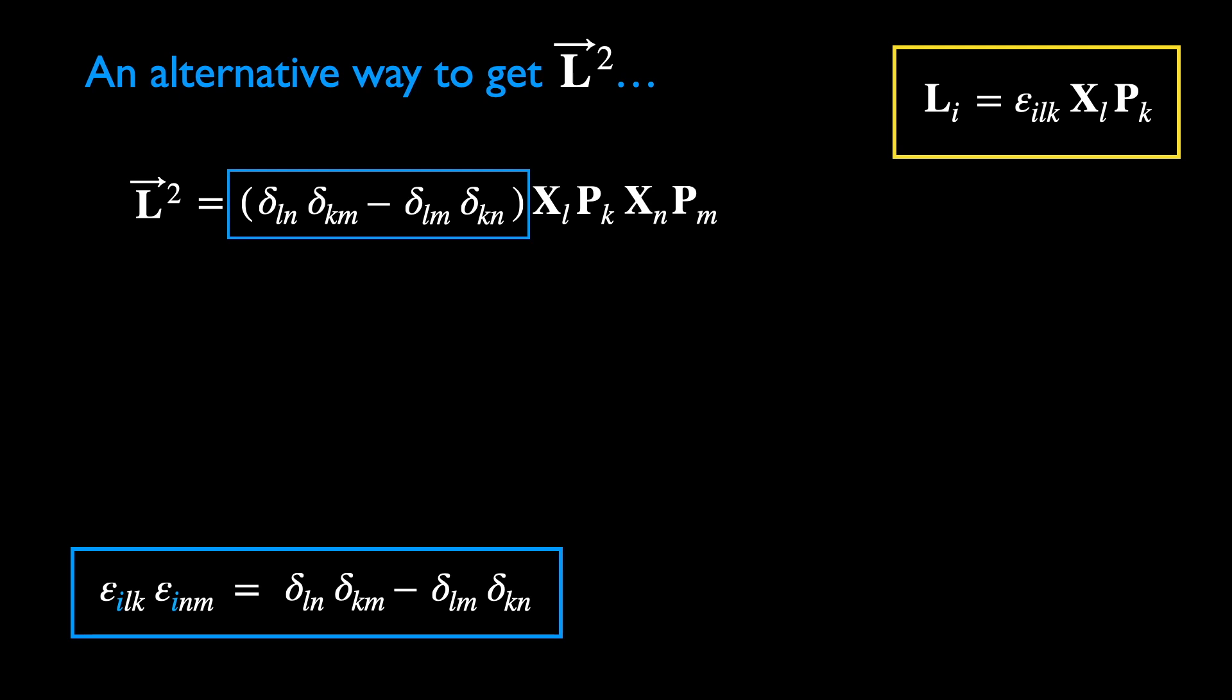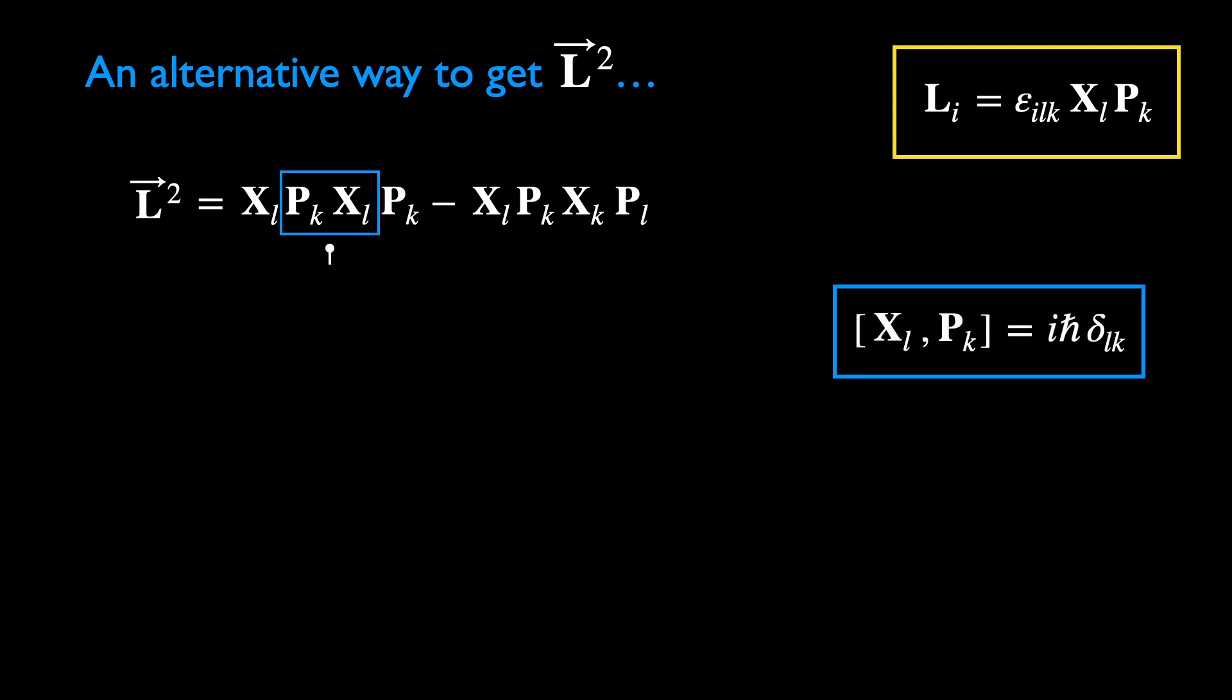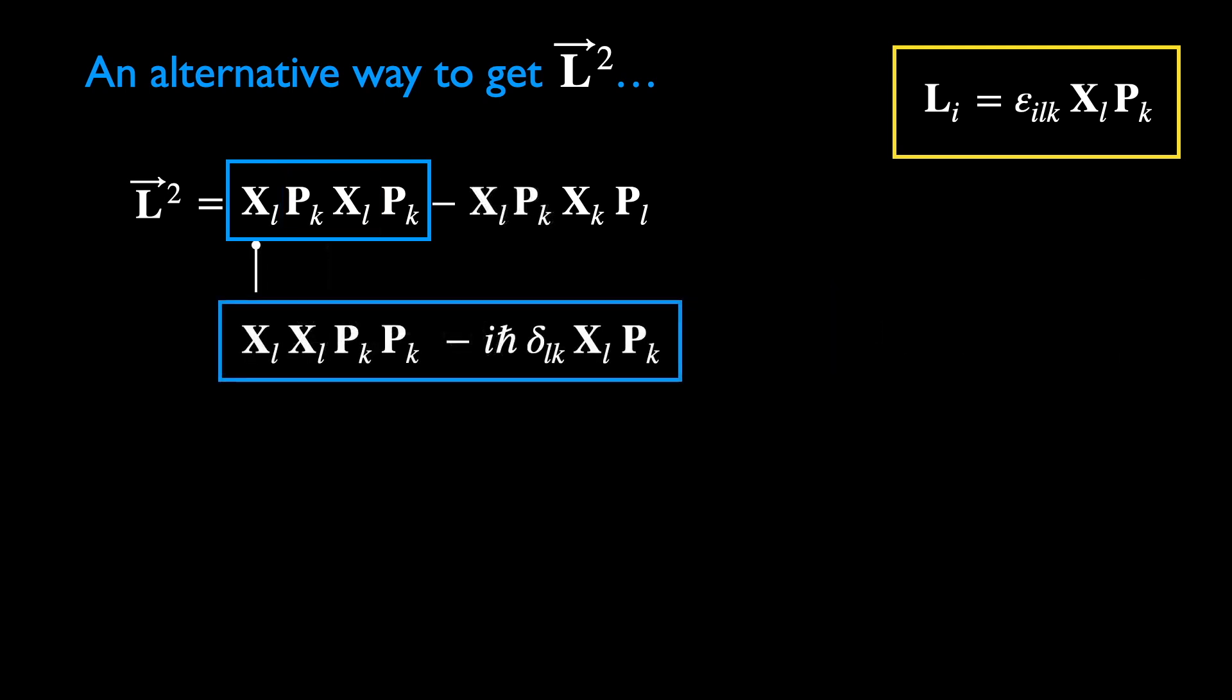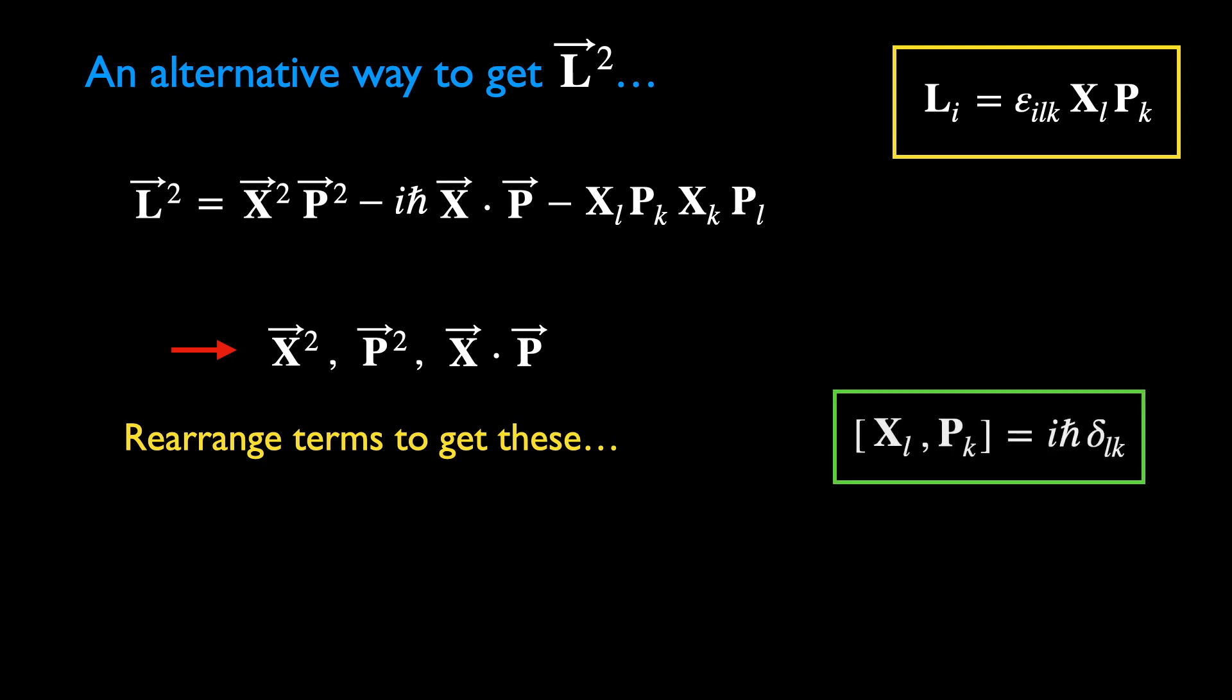These Kronecker deltas can be evaluated in a straightforward manner. Looking at the first term on the right hand side, we can rearrange the operators by using the canonical commutation relations. I hope you can see what we are trying to do here. We want to rearrange the operators such that we end up with the three combinations introduced earlier. All we need is to apply the canonical commutation relations repeatedly.